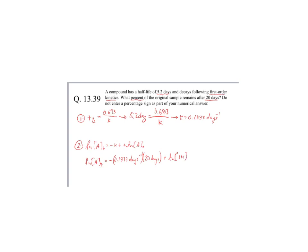The natural log of 1 is 0, and then I'm going to multiply these two together, 0.1333 times 20, and days cancel out. So I'm left with the natural log of concentration equals negative 2.666 plus the natural log of 1, which is 0. So that makes my life even easier. Now I'm left with the natural log of concentration at time T equals negative 2.666.